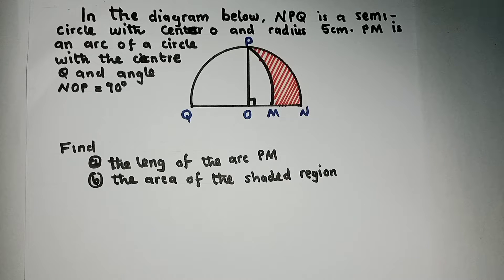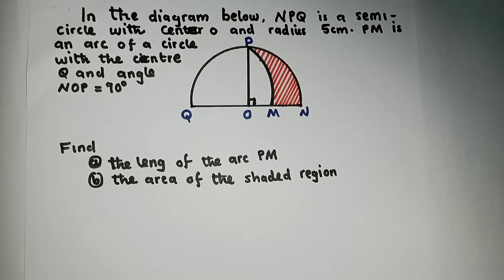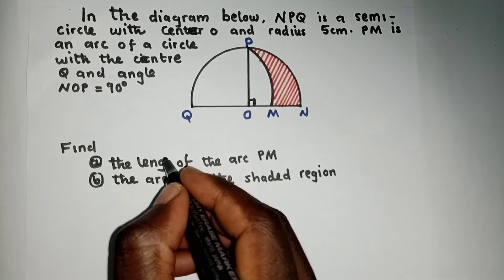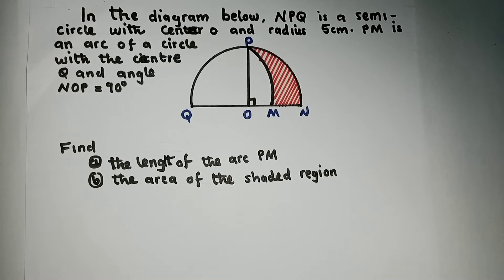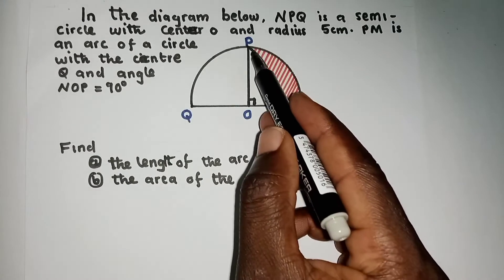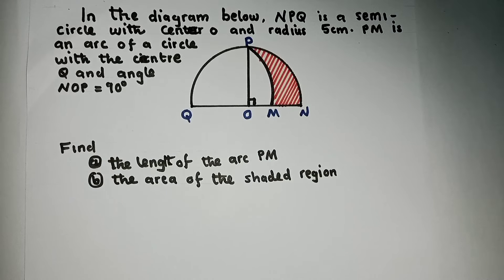Hi viewers. In this video we'll try to answer this question. The question reads: in the diagram below, NPQ is a semicircle with center O and radius 5 centimeters. PM is an arc of a circle with center Q, and angle NOP is equal to 90 degrees. Find (A) the length of the arc PM, and (B) the area of the shaded region. Let's jump into it.